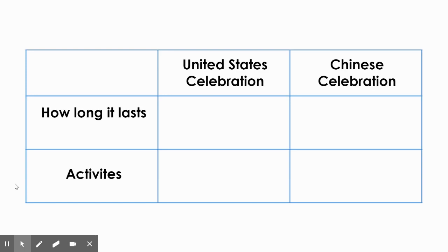You're going to be comparing the United States celebration of New Year's with the Chinese celebration of New Year's. So in the top row, you will write United States celebration and Chinese celebration. The two aspects of the celebration that we will be comparing and contrasting are how long it lasts and the activities that happen during the holiday. So the other two rectangles, you will fill in with how long it lasts and the activities. Press pause as you are writing and then you can press play when you're ready to move on.